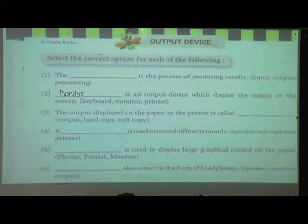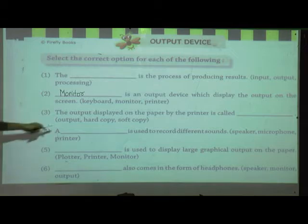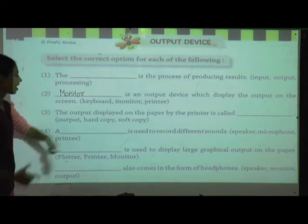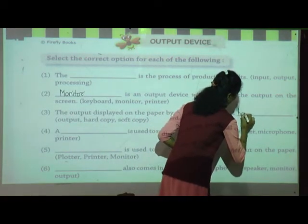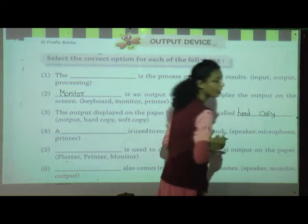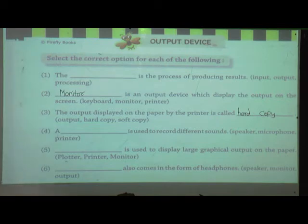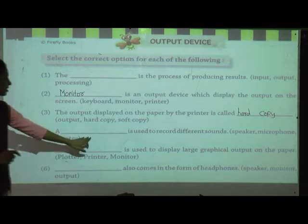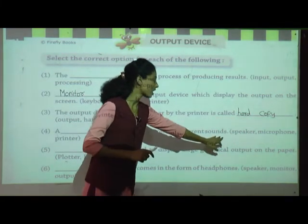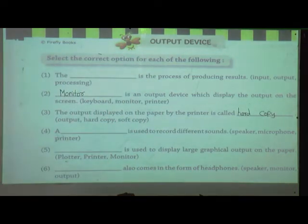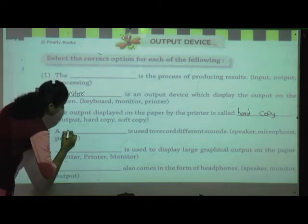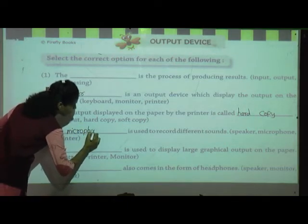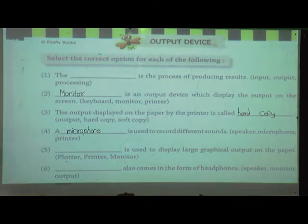The output displayed on the paper by the printer is called hard copy. H-A-R-D-C-O-P-Y. Next: blank is used to record different sounds. The device used for recording different sounds — speaker, microphone, or printer? Microphone. M-I-C-R-O-P-H-O-N-E. Microphone is used to record different sounds.